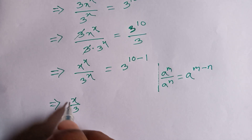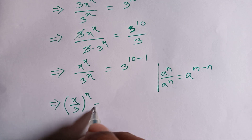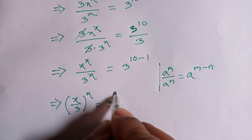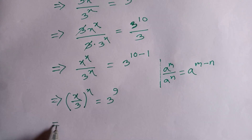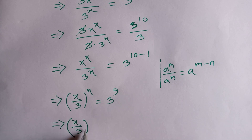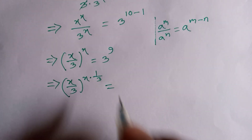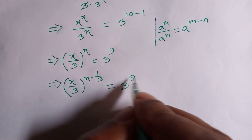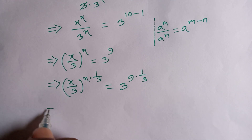...x divided by 3, whole to the power x, is equal to 3 to the power 9. Now we multiply both sides by 1 over 3, so x divided by 3, whole to the power x, times 1 divided by 3 is equal to 3 to the power 9 times 1 over 3.